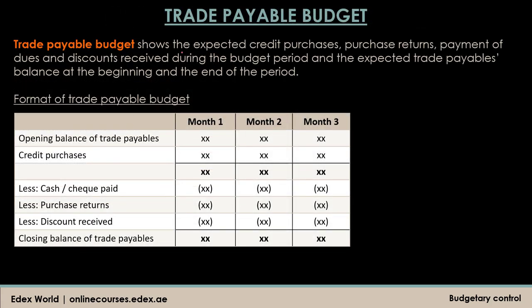Finally, we have the trade payable budget, which shows the expected credit purchases for the period, expected purchase returns, payment of dues to creditors, any discounts received, and the closing and opening balances for the budget period. The format is very similar to the trade receivables budget: opening balance plus credit purchases, then deduct payment of dues, discounts, and purchase returns to arrive at the closing balance.